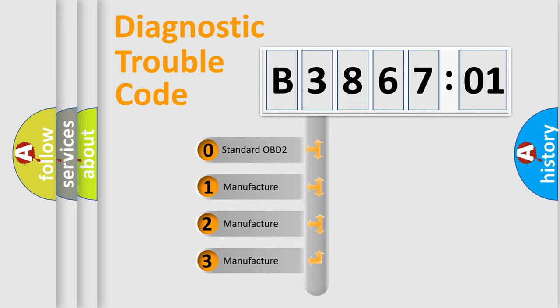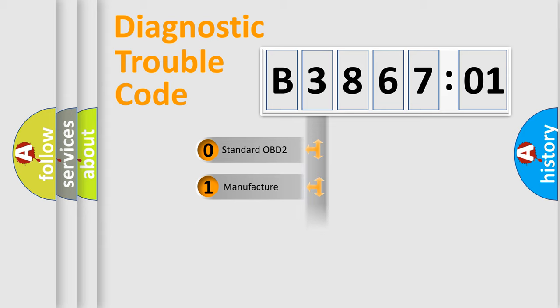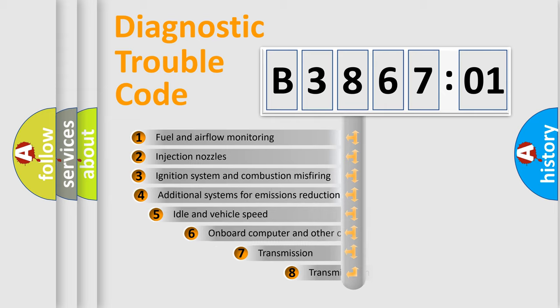If the second character is expressed as zero, it is a standardized error. In the case of numbers 1, 2, or 3, it is a manufacturer-specific expression of the car-specific error.